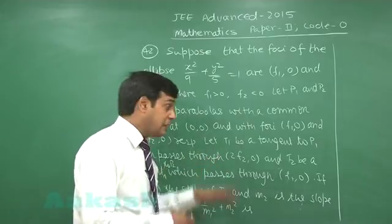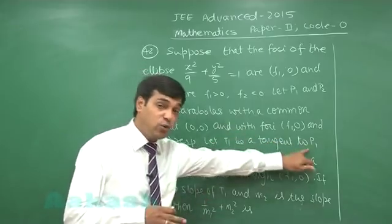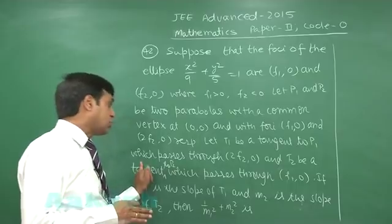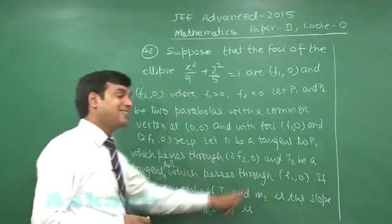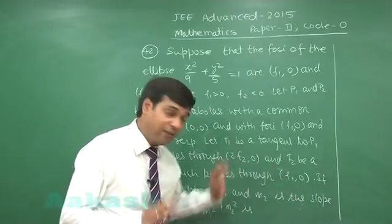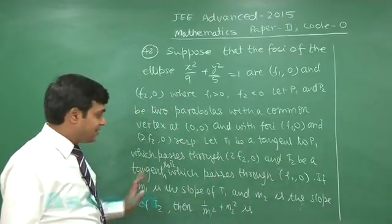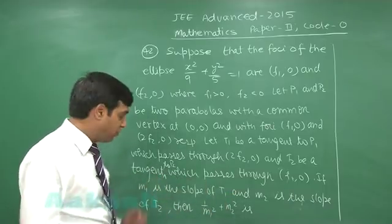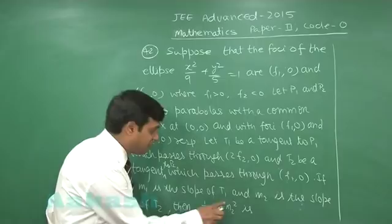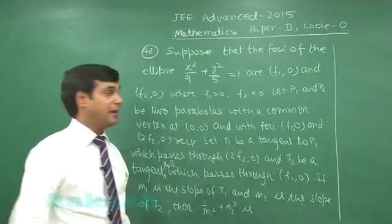It is given that T₁ is a tangent to P₁ passing through F₂, and T₂ is a tangent to P₂ passing through F₁. If m₁ is the slope of T₁ and m₂ is the slope of T₂, we have to find the value of 1/m₁² + m₂².